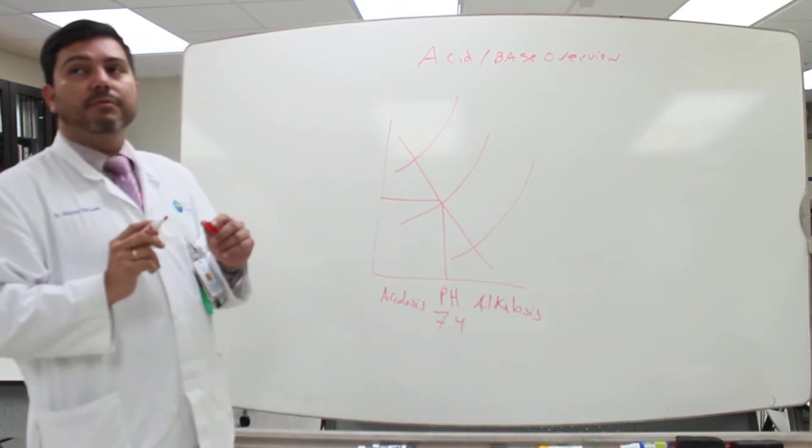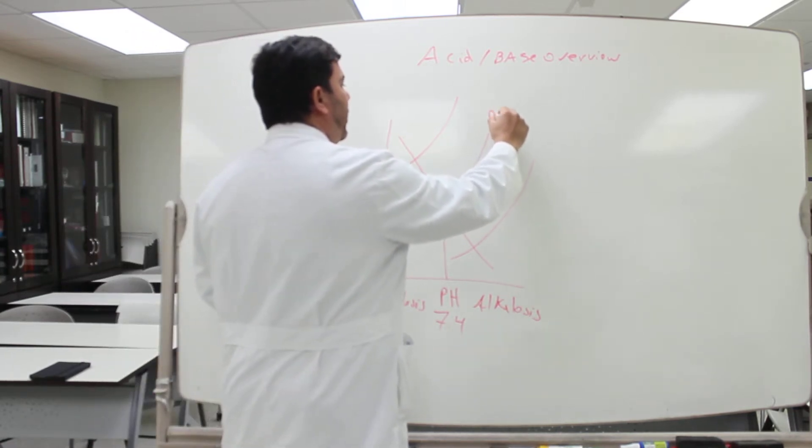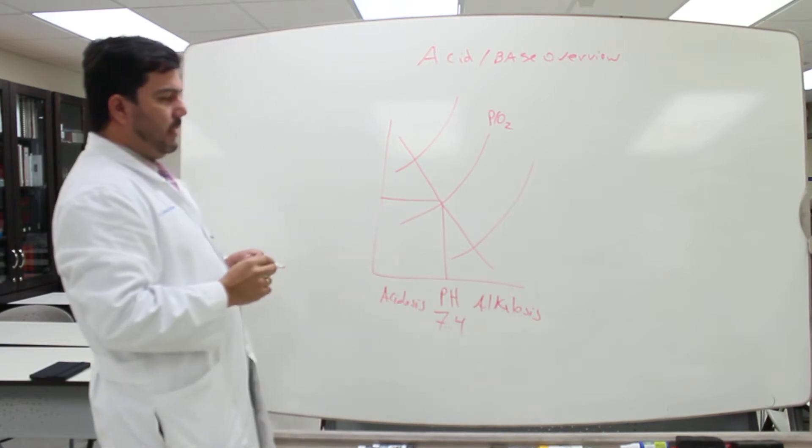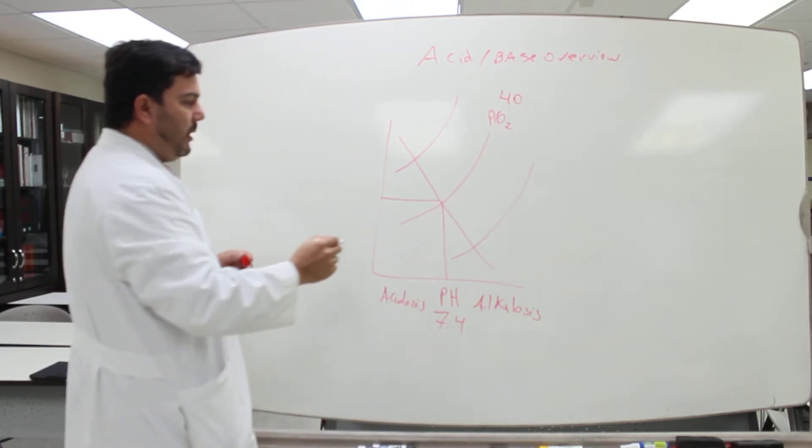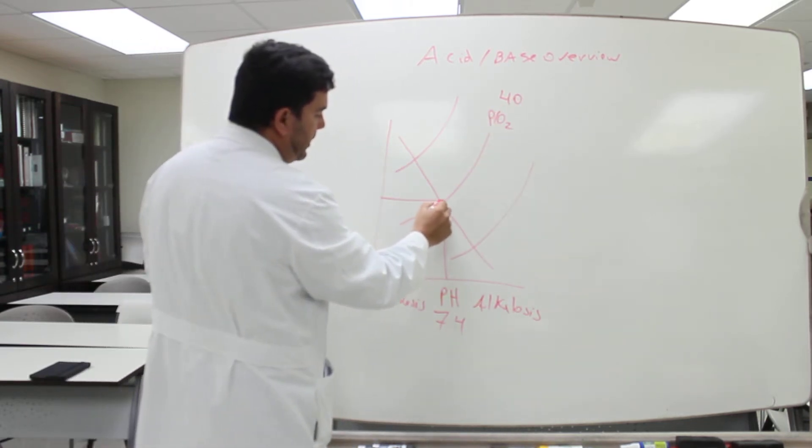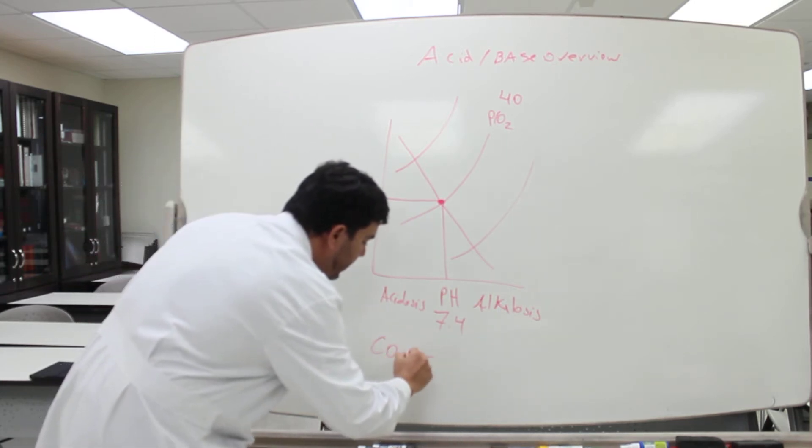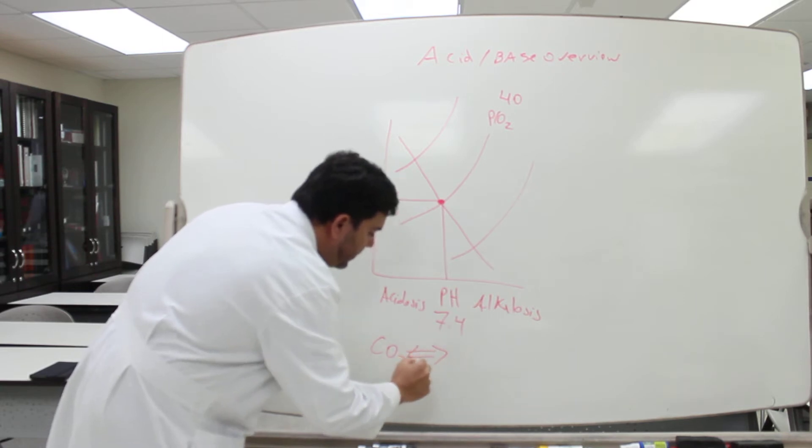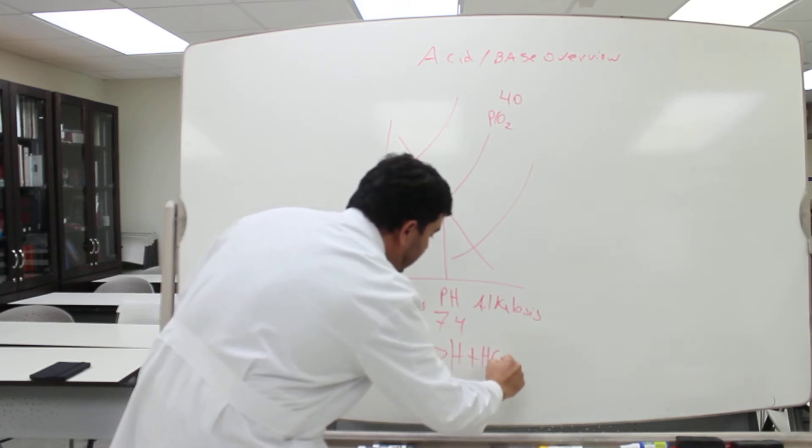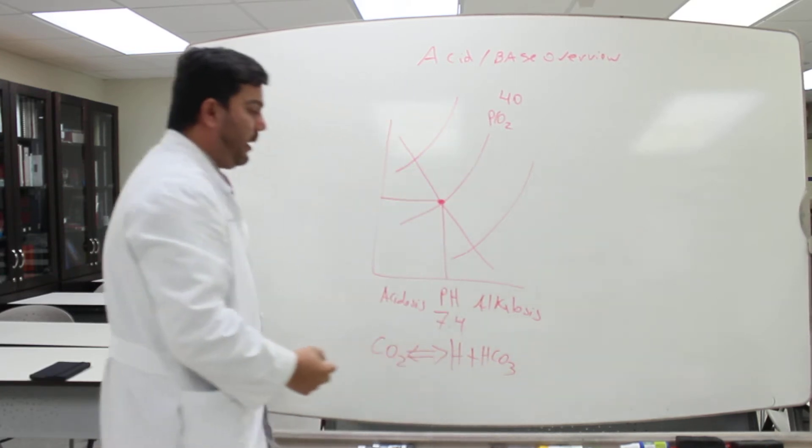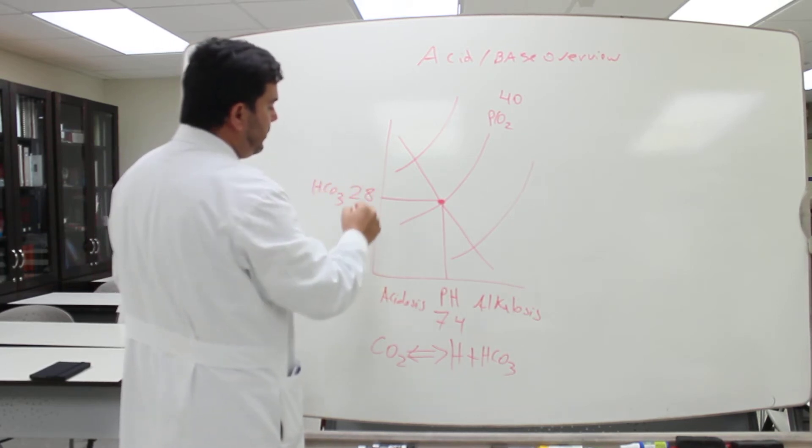The other number that you have to check next is the PCO2. In a normal patient, this is about 40. This is normal. And everything normal is here. This is an equilibrium. CO2 is a reversible reaction. You can convert into the ions H plus HCO3. This is the bicarbonate. The bicarbonate, the normal limit is around 28.